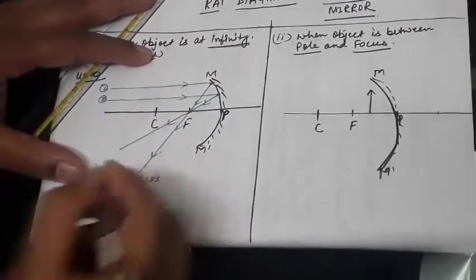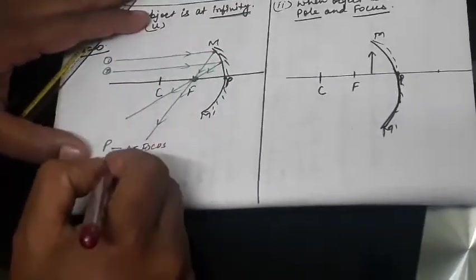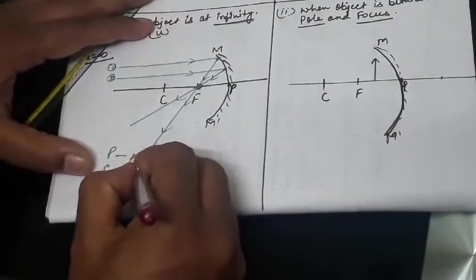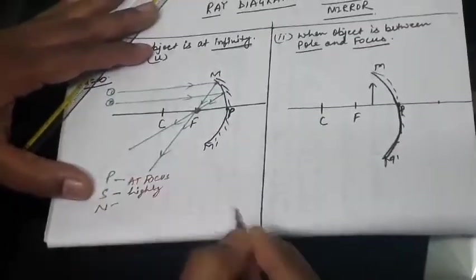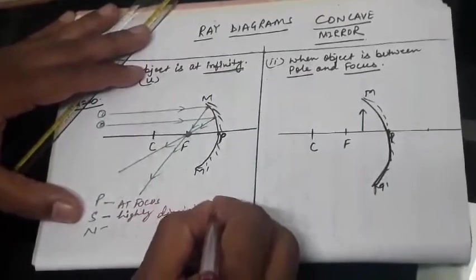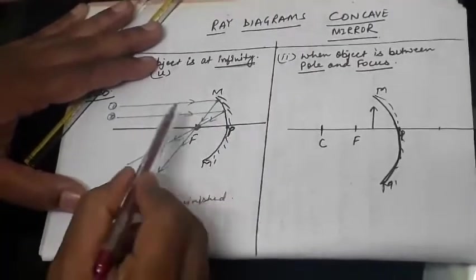Image is formed at focus. See this place, image is formed. Size, S for size. Size is very diminished, highly diminished. Diminished means very very very small point size.